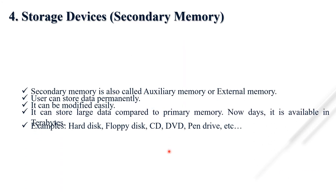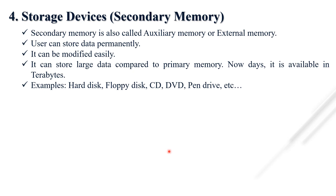The last component of the computer is secondary memory, also known as auxiliary or external memory. It is non-volatile — data remains even when the computer is switched off, unlike RAM. Secondary memory can store large amounts of data, nowadays up to terabytes, and can be modified easily. Examples include hard disk, floppy disk, CD, DVD, and pen drives.